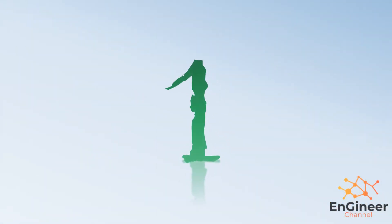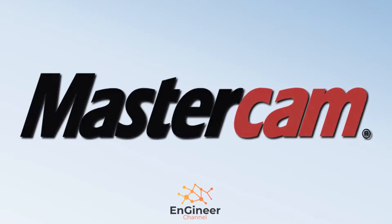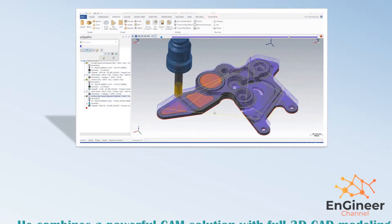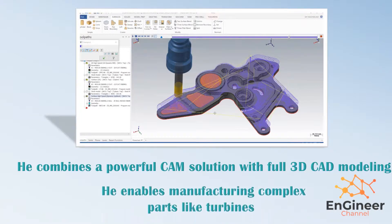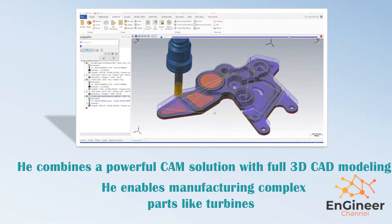Number one is MasterCAM. This software combines a powerful CAM solution with full 3D CAD modeling. It enables manufacturing complex parts like turbines.